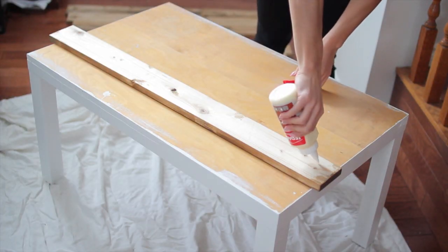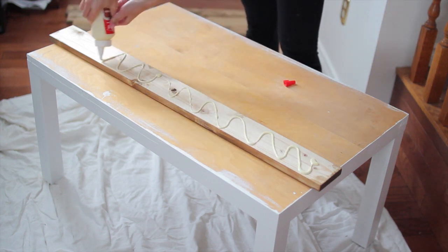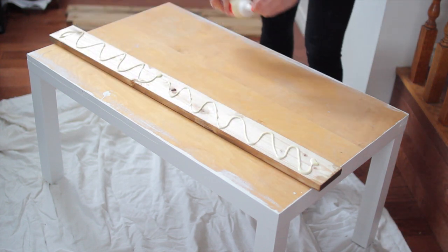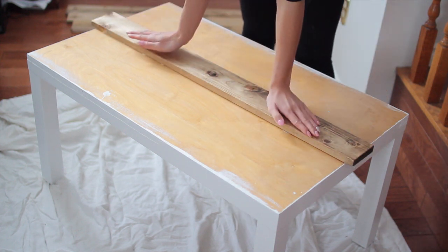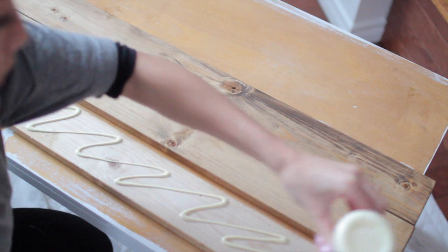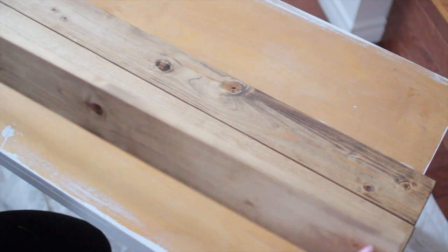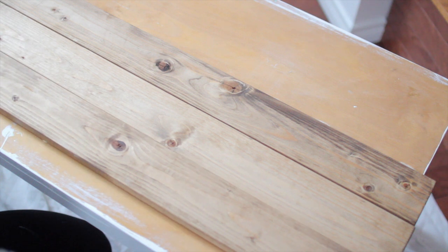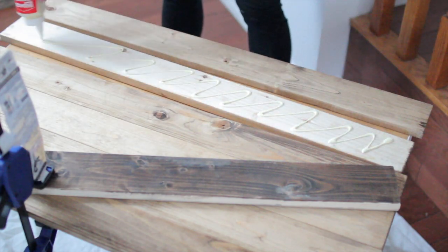We are gluing our one-by-fours down with wood glue, and this is a little bit tricky because these pieces are definitely going to move. If you're more comfortable nailing down your first piece so that all the others don't move, then you can do that. But I did want to see if everything was in line before I started nailing any pieces down permanently on the table.